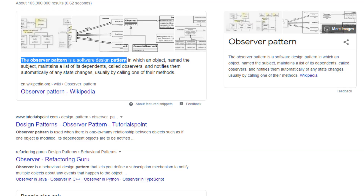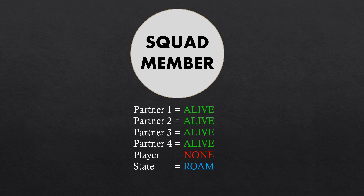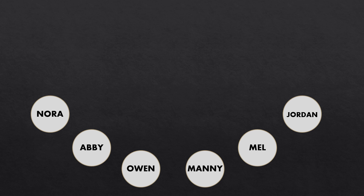I used what's called the observer pattern to do this. I started out by making the AI class, which I call the squad member. This squad member had a list containing its partners and whether they were dead or alive. The AI also had a finite state machine for movement and actions — I did not implement this, but you could also have information regarding the player. So let's imagine you have six squad members with the information I mentioned previously.